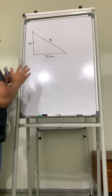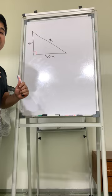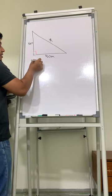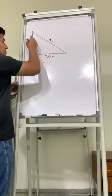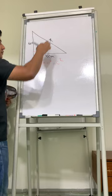So what's the formula? The formula is a square, which is the hypotenuse, is equal to b square, which is the base, plus c square. What we do is we just substitute the values. So X square is equal to 4 square plus 6 square.